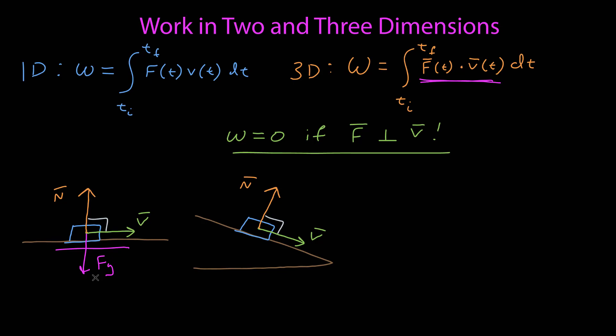On an incline, the velocity is no longer perpendicular to the force due to gravity, but it's still perpendicular to the normal force of the surface on the object. So the dot product between those two vectors is 0, and so the work done by the normal force on an object sliding on a surface is always going to be 0.